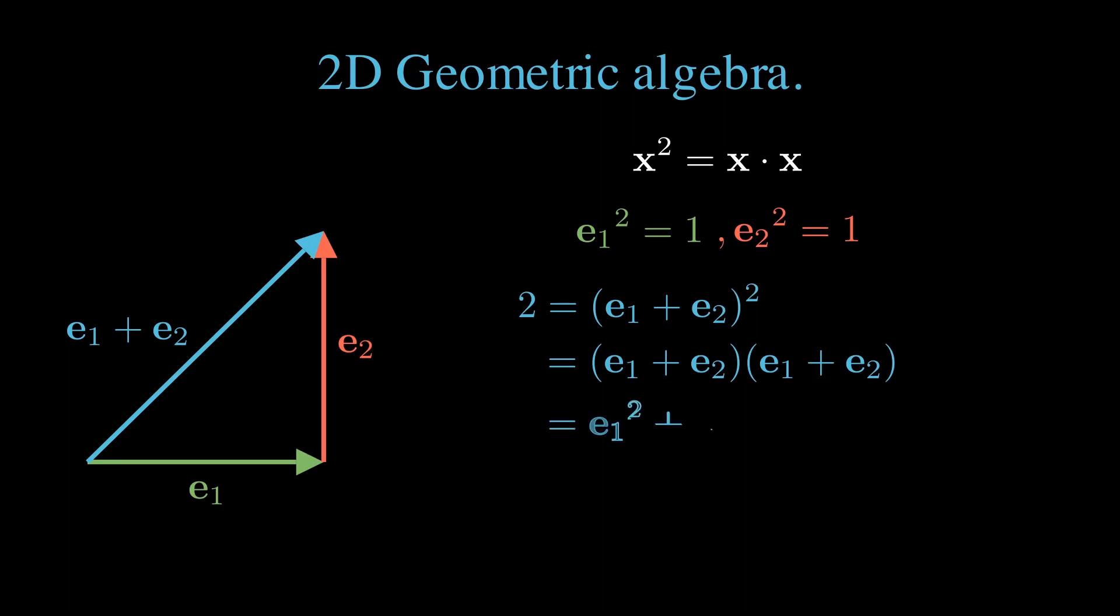We have e1 squared plus e2 squared plus each of the inner products, e1 e2, and e2 e1. That gives us 2 plus e1 e2, plus e2 e1.